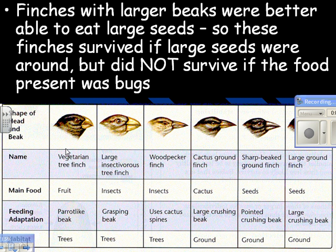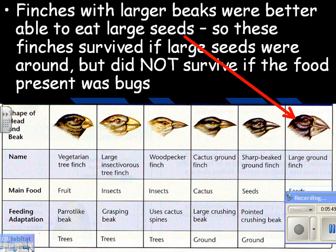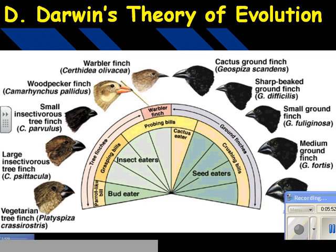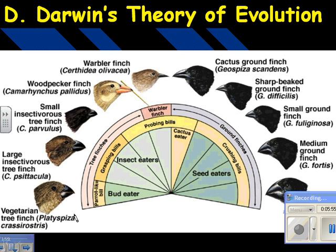Finches with larger beaks were better able to eat large seeds, so these survived where large seeds were present but did not survive where the food was bugs. Looking at the picture: bud-eater, insect-eater, cactus-eater, seed-eaters — you can see the variation in the beaks. The insect one with its tiny little beak would not do well eating big seeds, and the large-beaked one wouldn't do well eating little bugs. There are also ground finches versus tree finches, where the food available differs depending on whether you're feeding on the ground or in a tree.